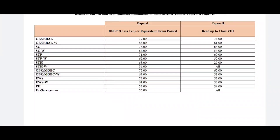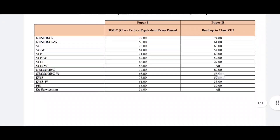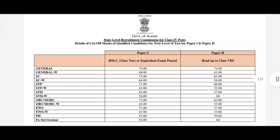Next, ST Aso cut-off — paper one is 63, paper two is 27. Next, OBC/MOBC cut-off — paper one is 72, paper two is 62. OBC/MOBC W cut-off — paper one is 63, paper two is 53. Almost all cut-off data has been covered.